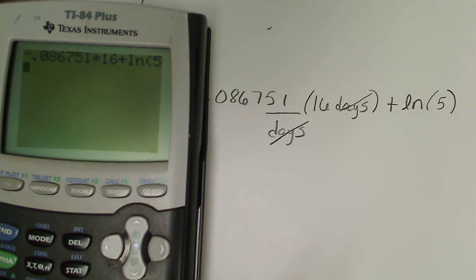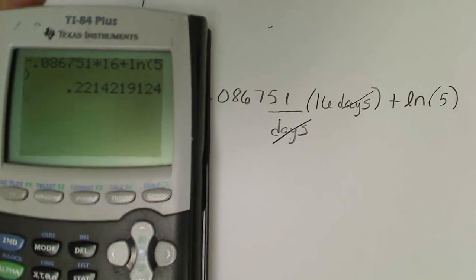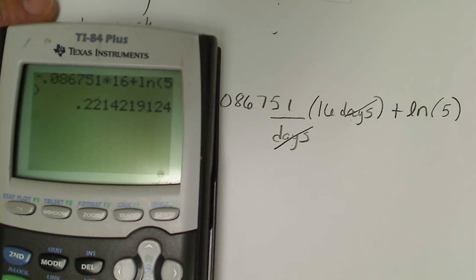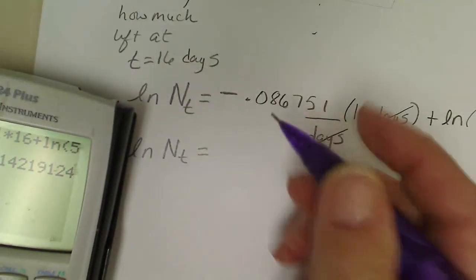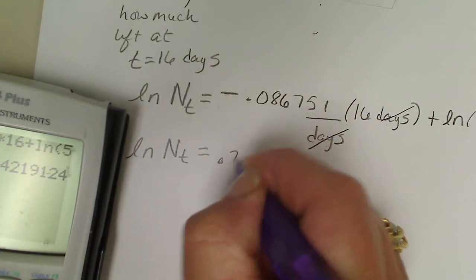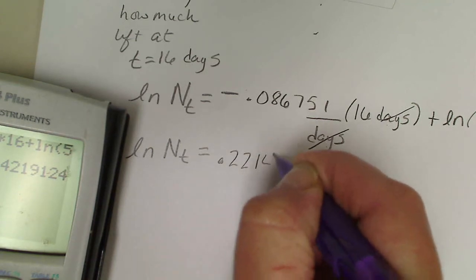We really shouldn't have to close the parenthesis but I'm kind of anal about that. So if we do that we get the ln of Nₜ is 0.2214.